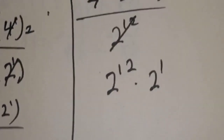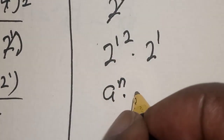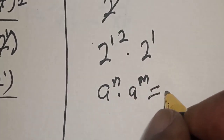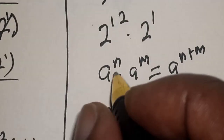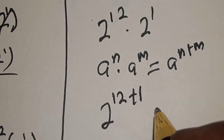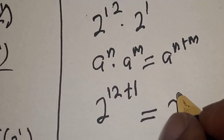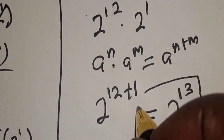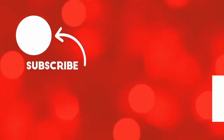Using the exponent rule: a raised to power n multiplied by a raised to power m equals a raised to power (n plus m). Therefore, 2 raised to power 12 times 2 raised to power 1 equals 2 raised to power 13. That is our final answer. If you enjoyed the class, please don't forget to like, share, comment, and subscribe. Thank you.